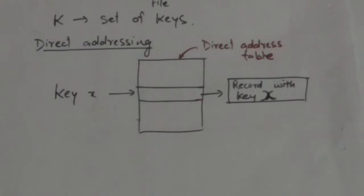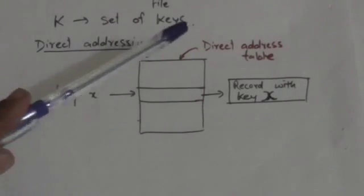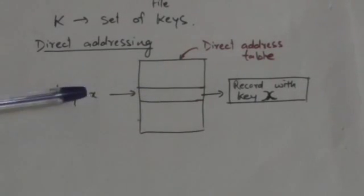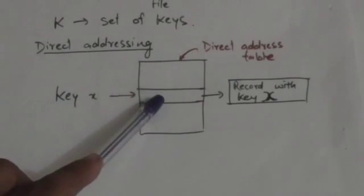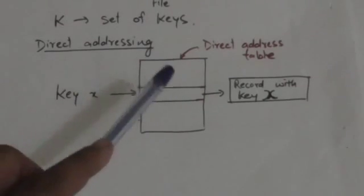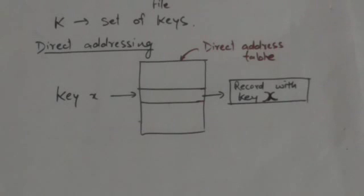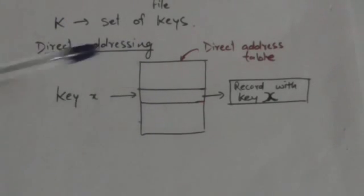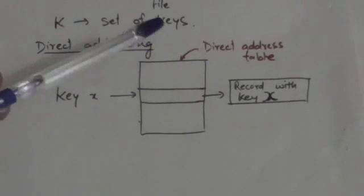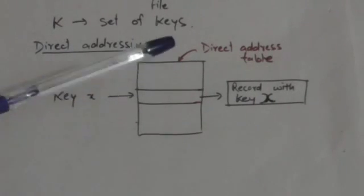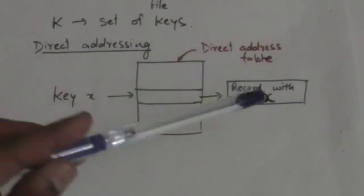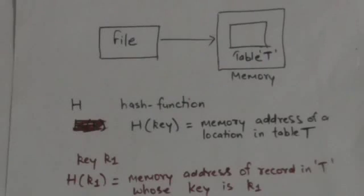In the direct address table, suppose there is a key X. There will be a slot corresponding to this key X, and this slot X points to the record whose key is X. So when we have to access a record whose key is X, we will access the slot of the table which corresponds to key X, and this slot will point to the record whose key is X.